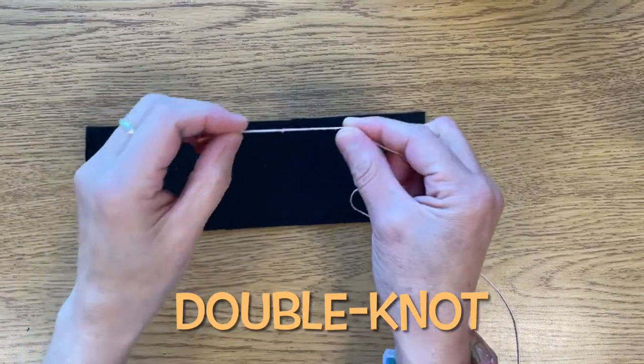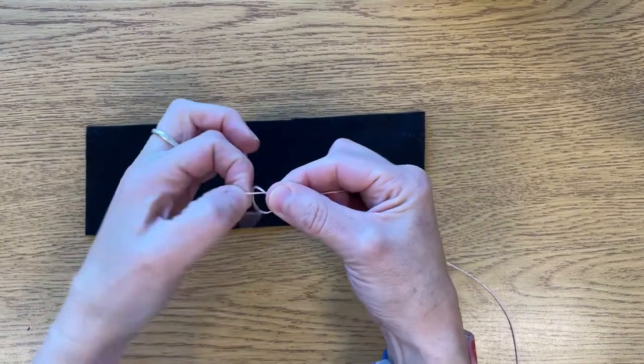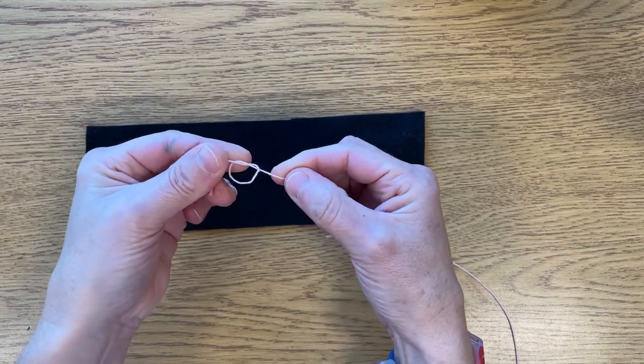Now if you want to, you can create a double knot by crossing your thread over where the first knot was and making another knot. This is called a double knot.